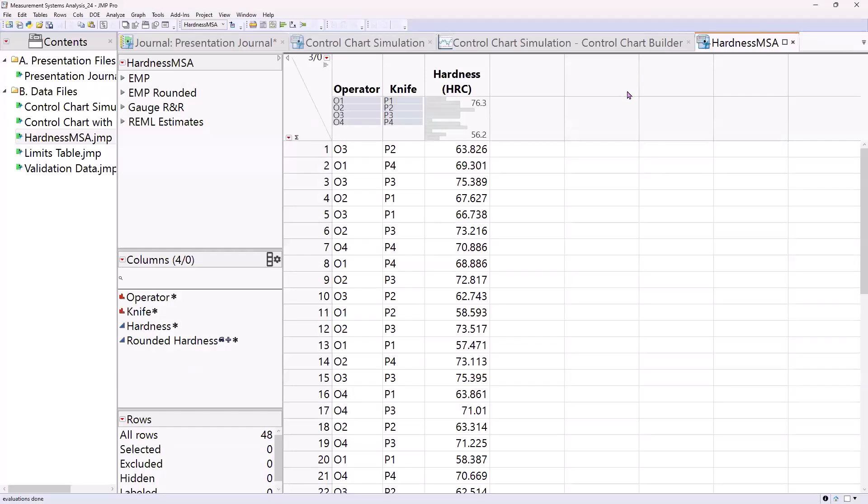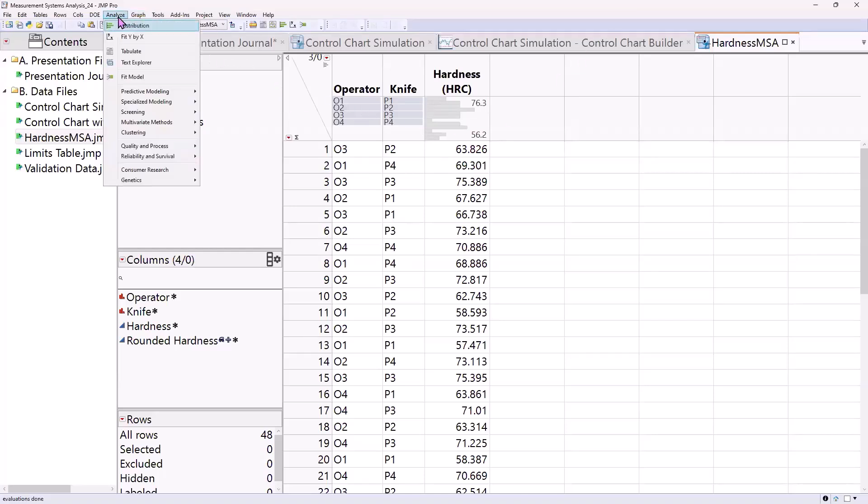Always, always, always, always randomize your measurement study. It really helps prevent biasing factors from popping up arbitrarily in your study. So this study has been randomized. And let's load it up and see what EMP can tell us.